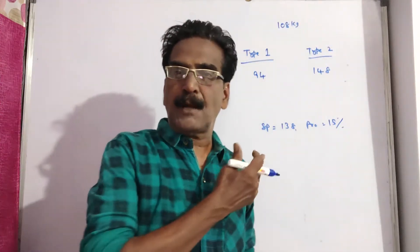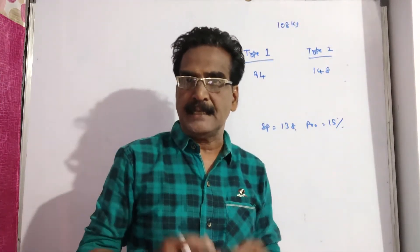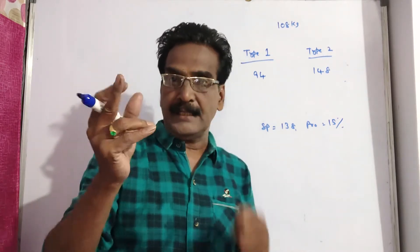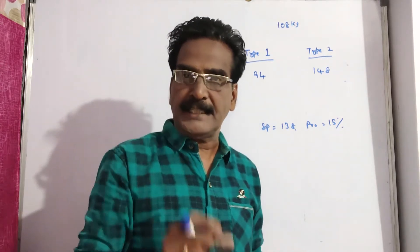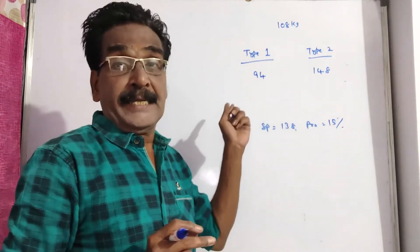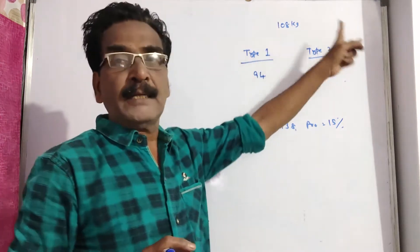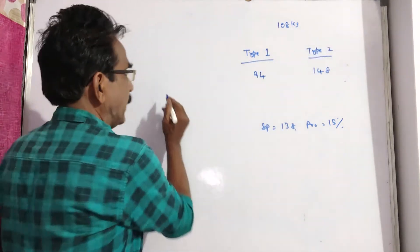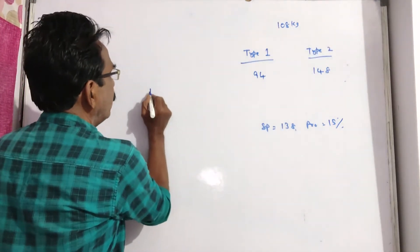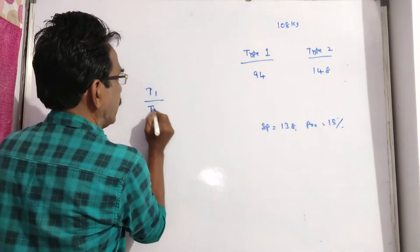This problem can be solved by the rule of allegation. By the rule of allegation, we get the ratio of quantities — the ratio of type 1 to type 2.